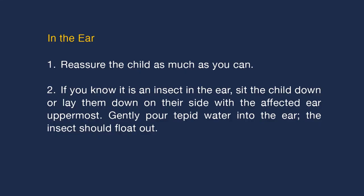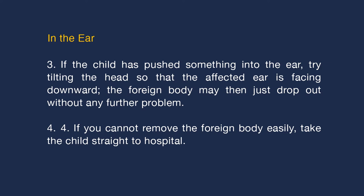Reassure the child as much as you can. If you know it is an insect in the ear, sit or lay the child down with the affected ear uppermost and gently pour tepid water into the ear — the insect should float out. If the child has pushed something into the ear, try tilting the head so that the affected side faces downward; the foreign body may then drop out. If you cannot remove it easily, take the child straight to hospital.